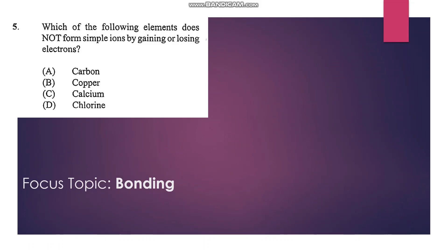Number 5: which of the following elements does not form simple ions by gaining or losing electrons? We have carbon, copper, calcium, and chlorine. Carbon is in group 4, and so it would be very difficult for carbon to form ions by losing or gaining electrons. Carbon shares electrons, so the answer would be A.